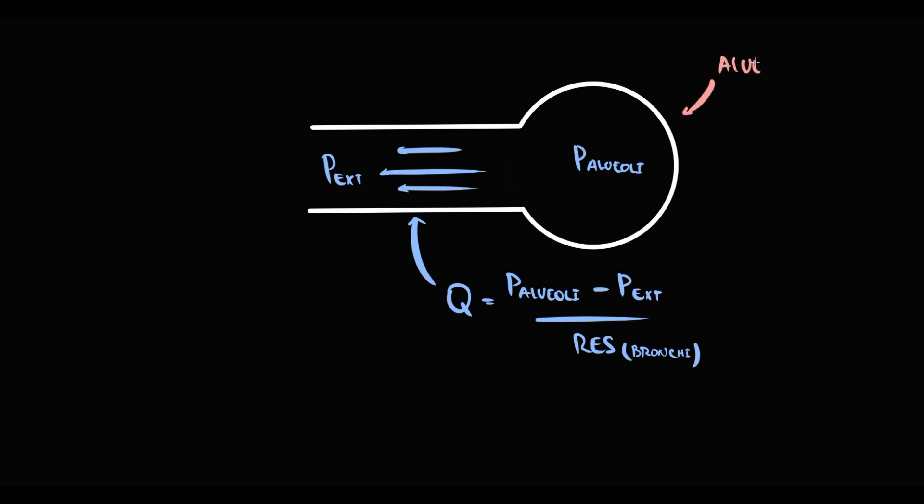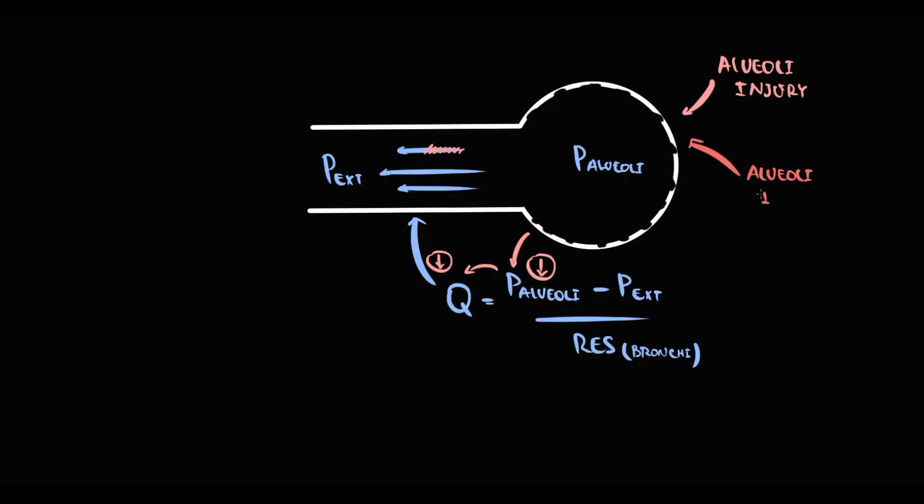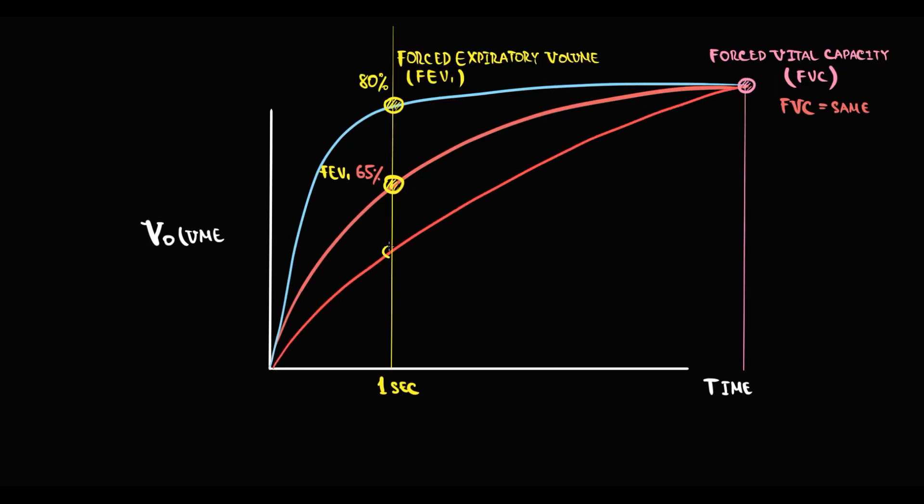In emphysema, damage to alveoli membrane causes decreasing elastic recoil of the alveoli. Decreasing elastic recoil affects the ability of the alveoli to create high intra-alveolar pressure on expiration. With decreasing pressure inside the alveoli, pressure gradient decreases, and as a result, airflow decreases. We can see this on a graph. Now in one second, instead of 80% of air, a person can breathe out only 65%, and FVC remains practically the same. Let's suppose that alveolar injury becomes even more severe. So intra-alveolar pressure on expiration decreases even further. With decreasing intra-alveolar pressure gradient, airflow decreases. Now in one second, a person can breathe out only 40%.